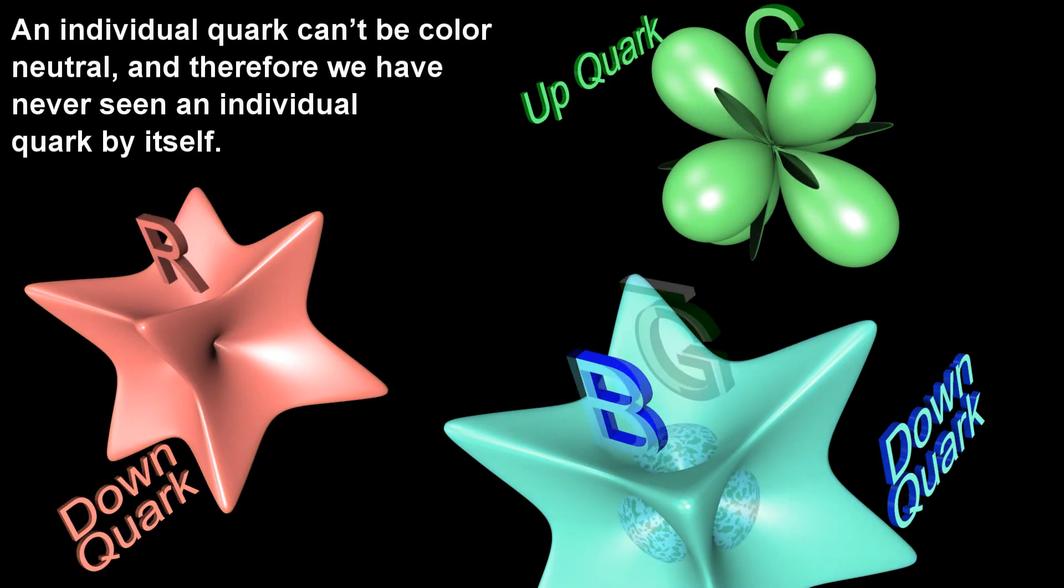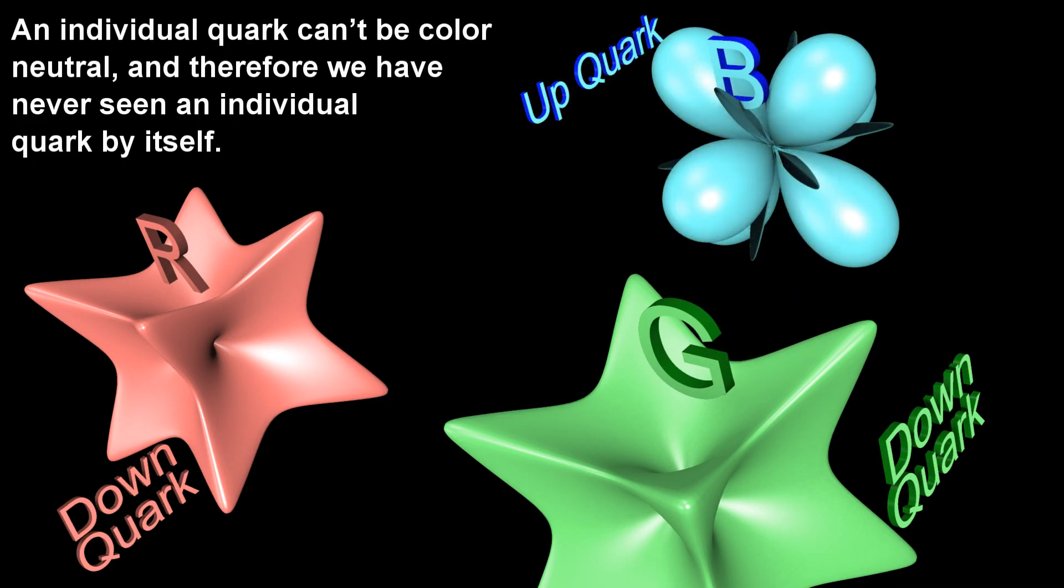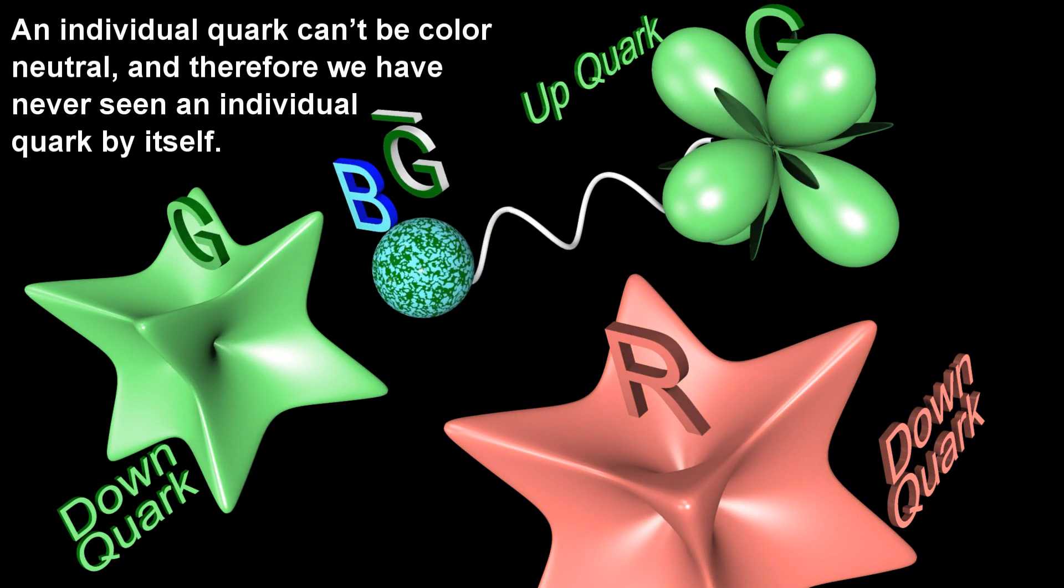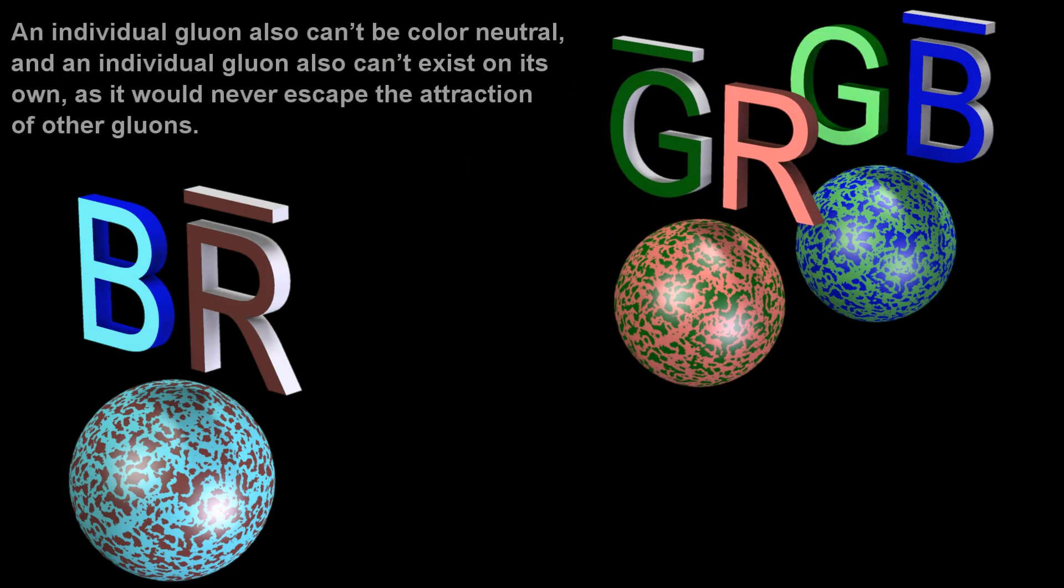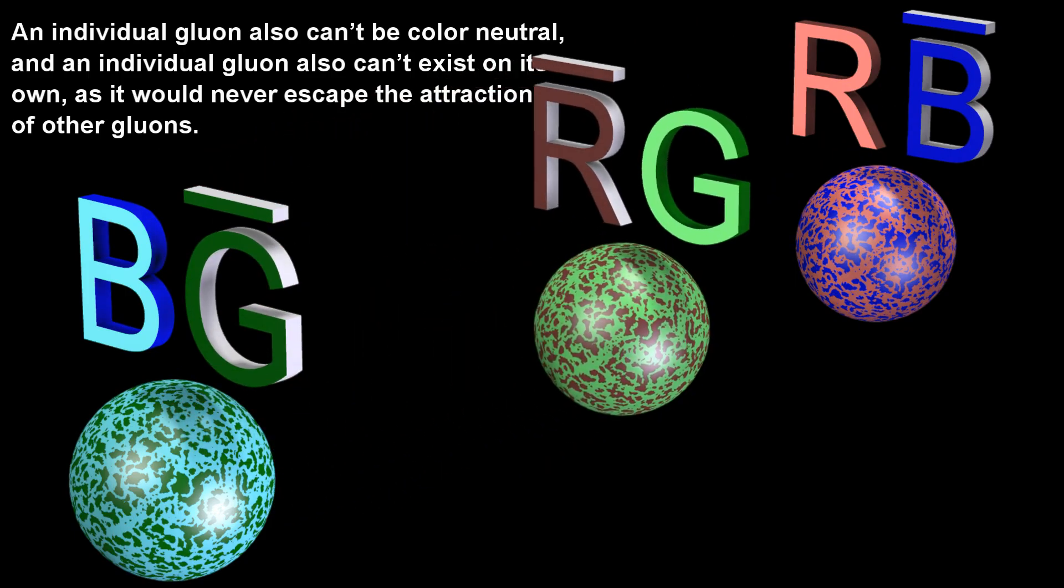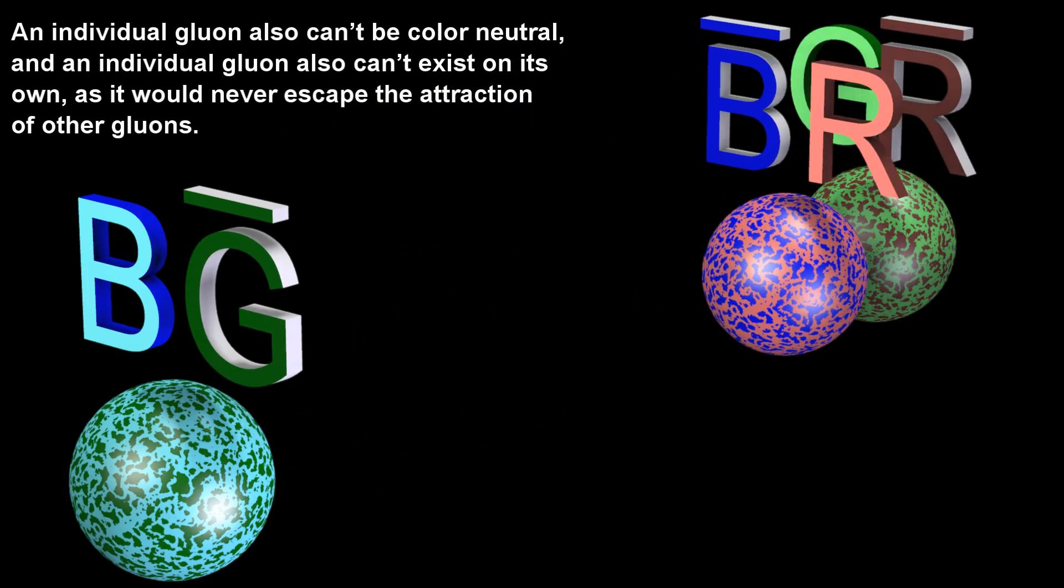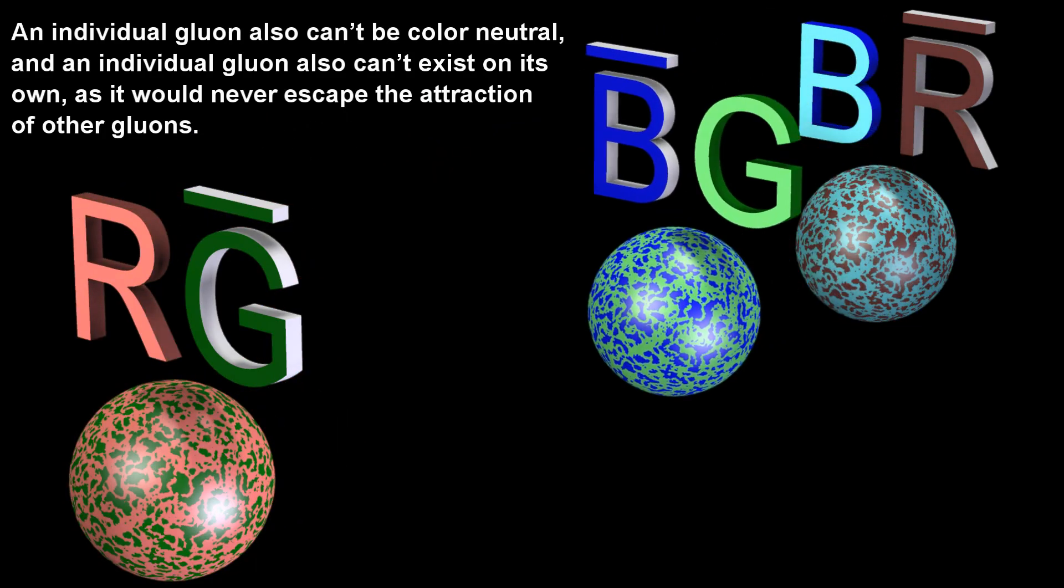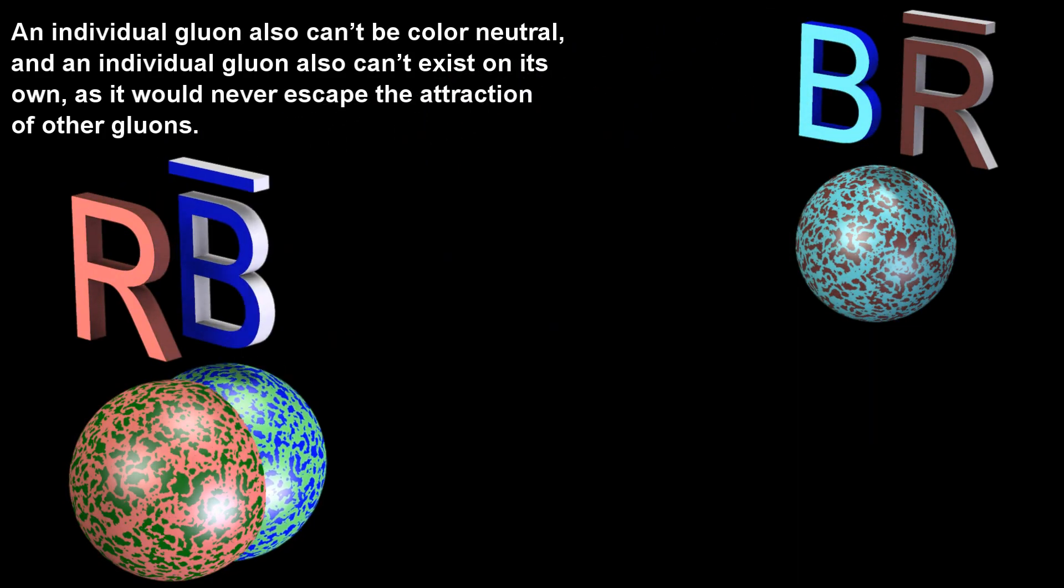An individual quark can't be color neutral, and therefore we have never seen an individual quark by itself. An individual gluon also can't be color neutral, and an individual gluon also can't exist on its own, as it would never escape the attraction of other gluons.